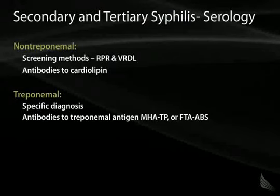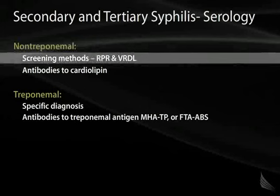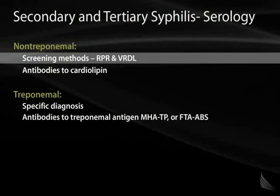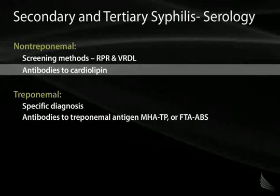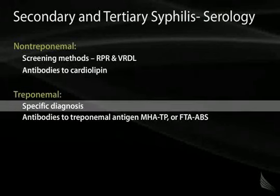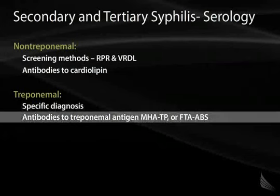With syphilis serology, we have non-treponemal and treponemal tests. Non-treponemal tests — the RPR and VDRL — are good screening methods, but not specific for Treponema pallidum and can have false positives from antibodies to cardiolipin. Both are positive in primary and secondary syphilis. Treponemal tests are more specific and used for confirmatory testing; these include the microhemagglutination Treponema pallidum (MHA-TP) and the fluorescent treponemal antibody absorption test (FTA-ABS), which are less likely to have false positives.